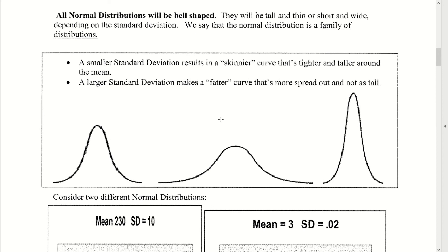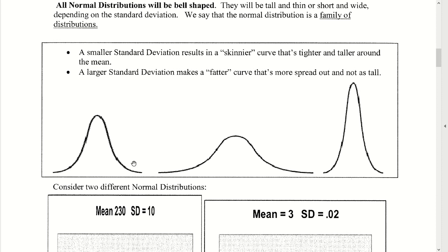In general, what defines any normal distribution is the value of the mean and the standard deviation. The mean tells you precisely where the peak of the bell occurs. Looking at three graphs from left to right, the one lying the most to the right has the largest mean, the middle one has the second largest mean, and the one whose peak is furthest to the left has the smallest mean.